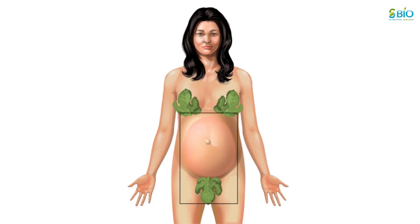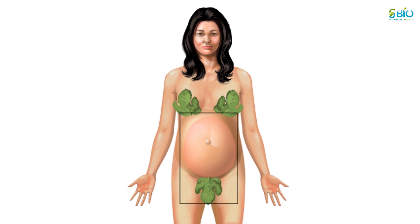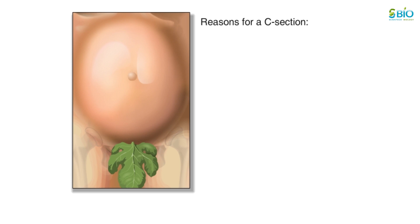A caesarean section is a way to deliver a baby by cutting through the skin of the mother's abdomen. Although caesarean C-sections are a relatively safe surgical procedure, they should only be performed in appropriate medical circumstances.